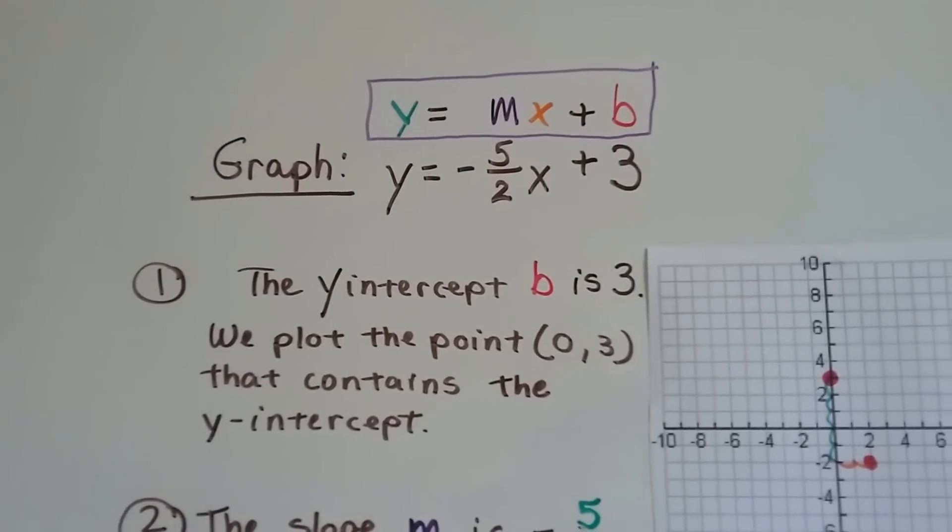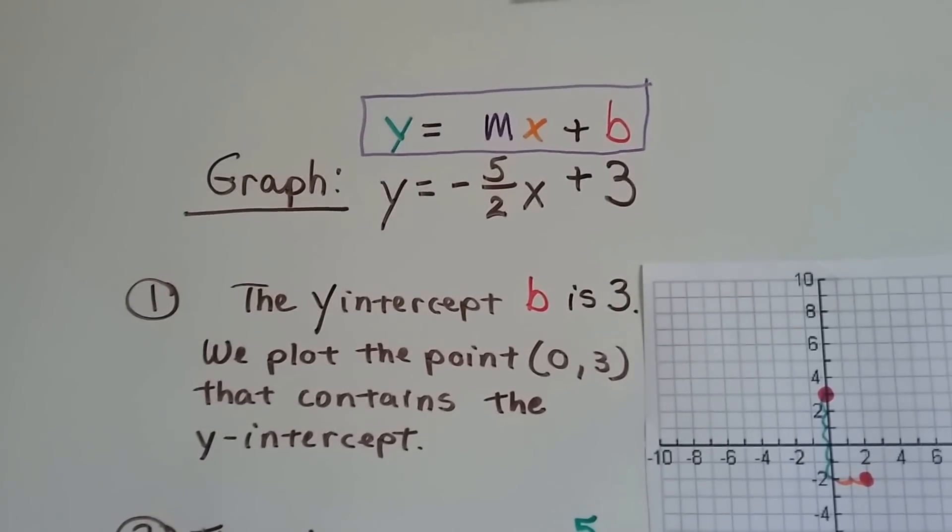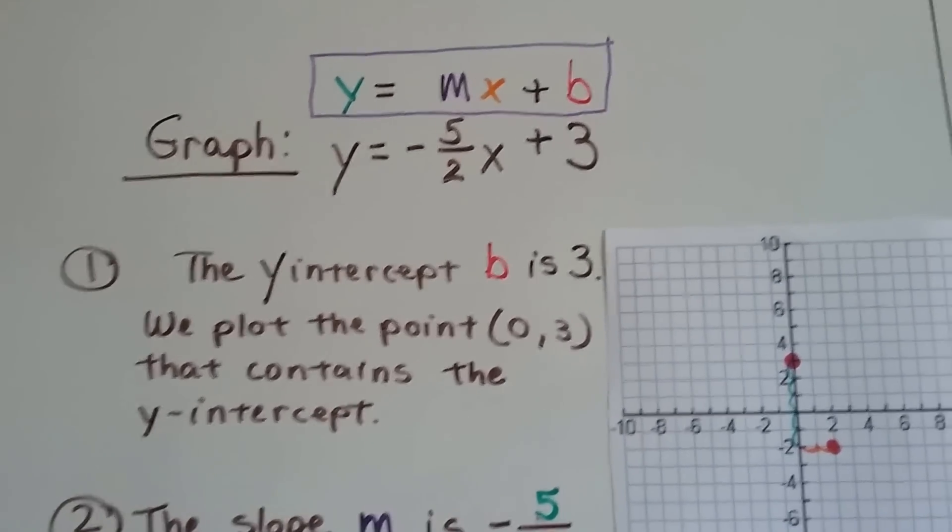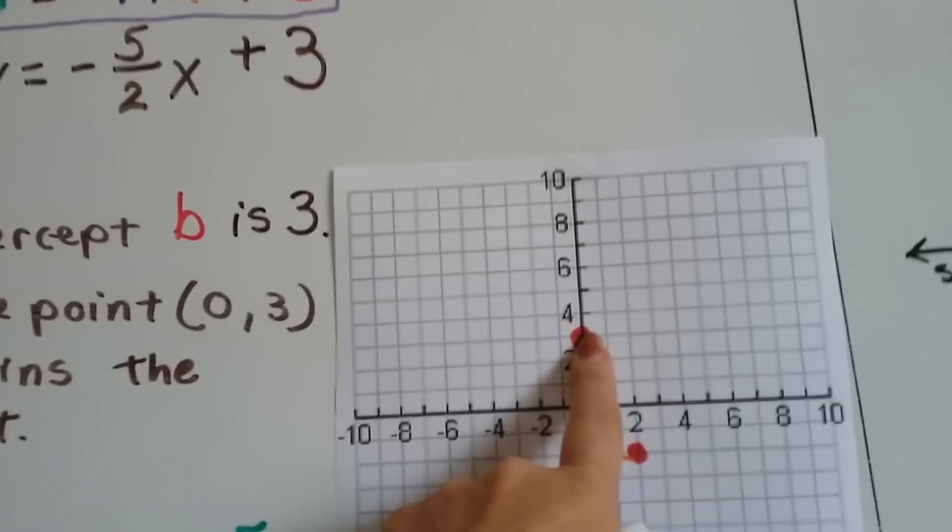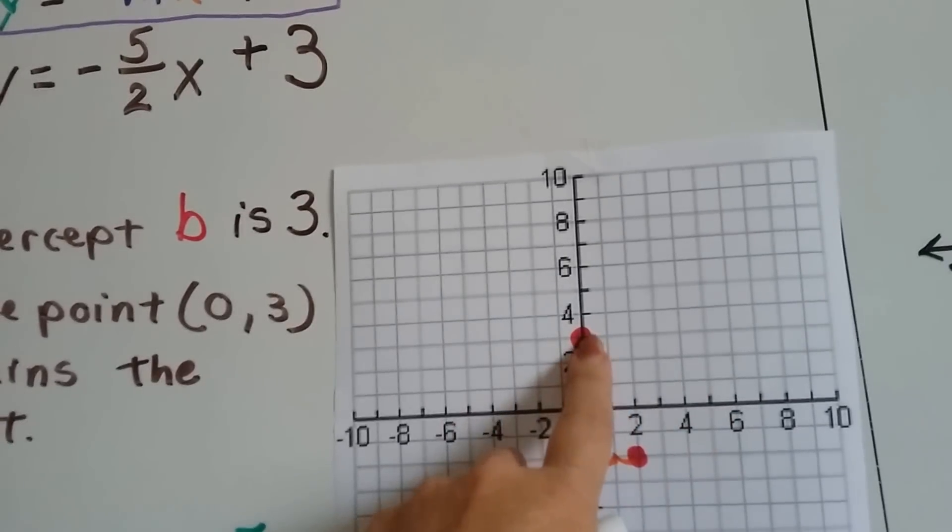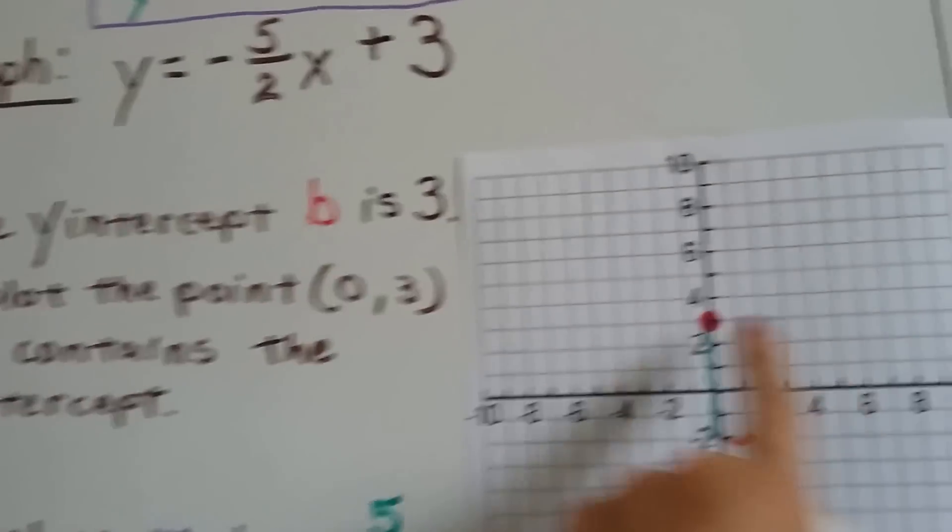And we know that the line is going to hit the y-axis at 3. So the y-intercept b is 3. We plot the point 0, 3. And that contains the y-intercept. So our point is going to be right here. It's 0 for x and 3 on the y-axis.